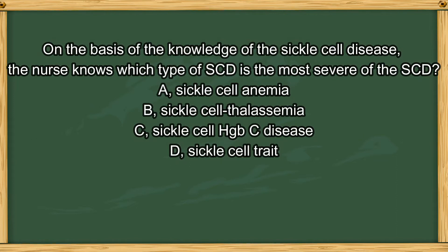Next question. On the basis of knowledge of sickle cell disease, the nurse knows which type of sickle cell disease is the most severe? A. Sickle cell anemia. B. Sickle cell thalassemia. C. Sickle cell hemoglobin C disease. Or D. Sickle cell trait.